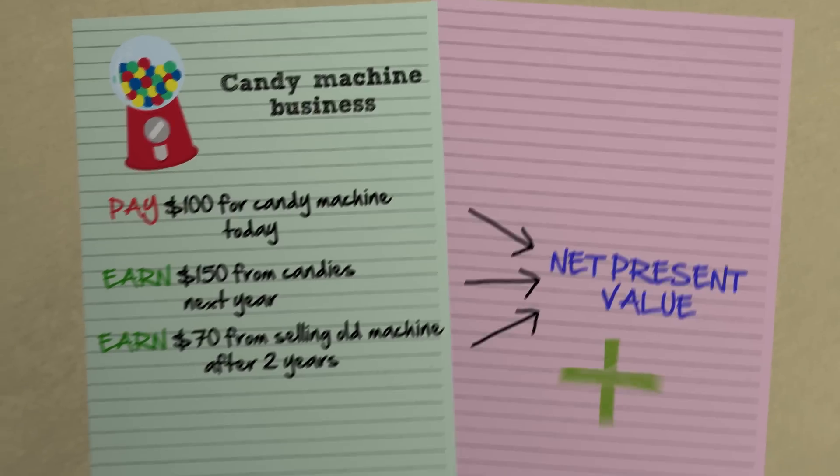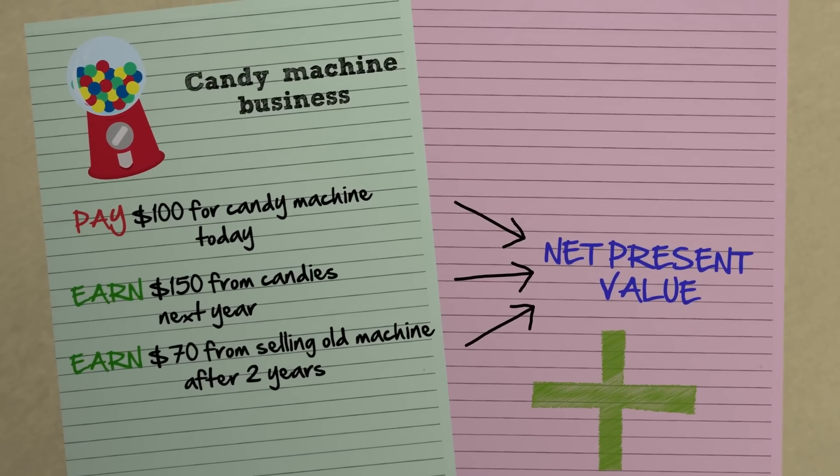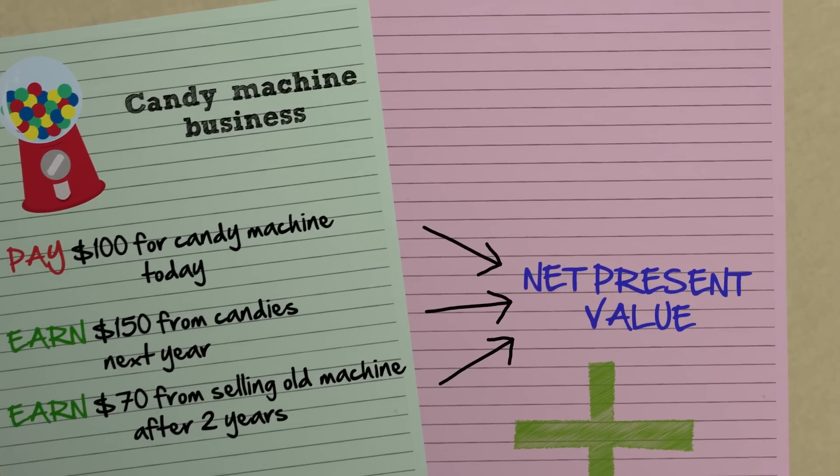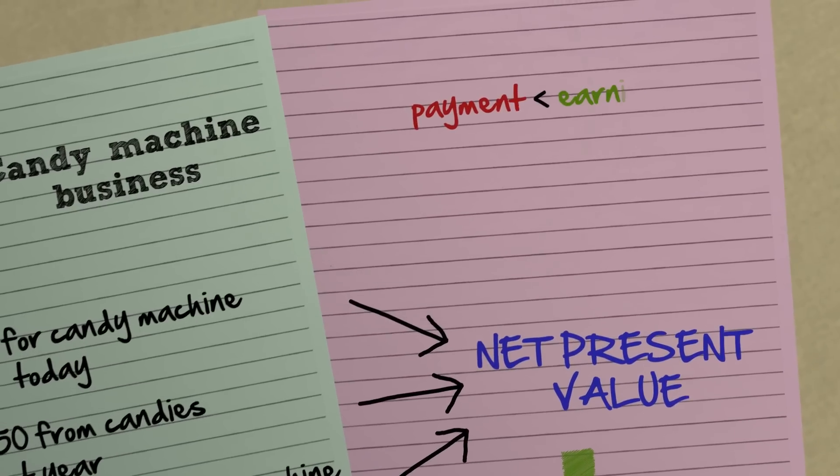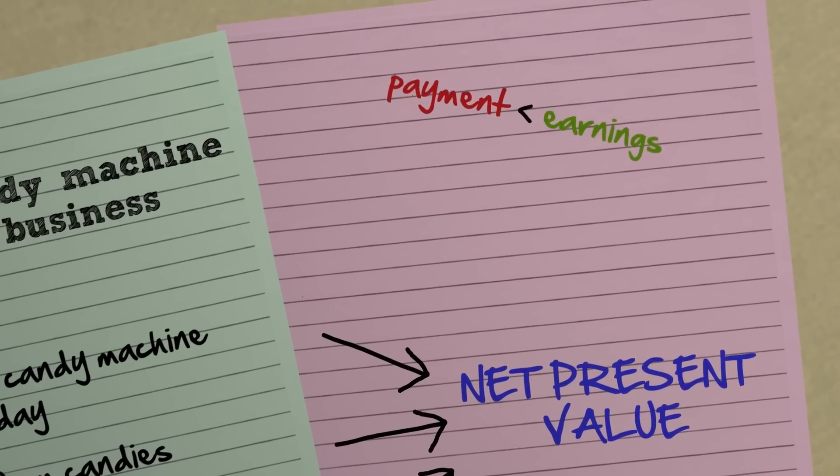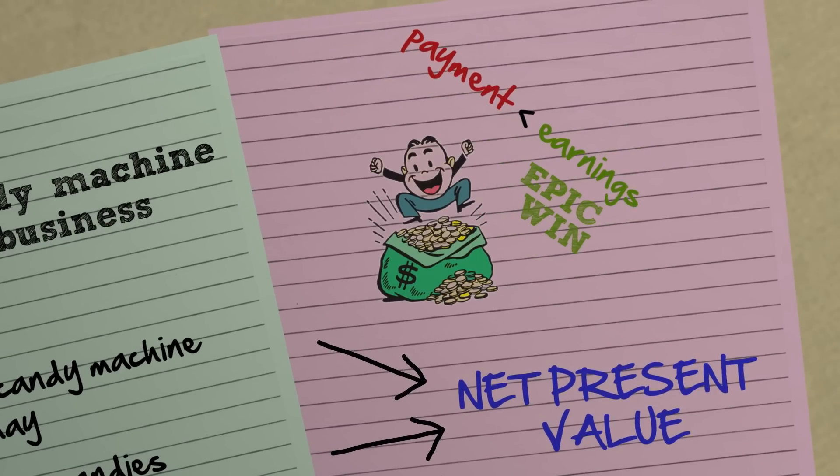If the Net Present Value is positive, then it's a good, profitable decision to do this candy machine business. It means that the Present Value of earnings is bigger than the Present Value of payments. So you win.